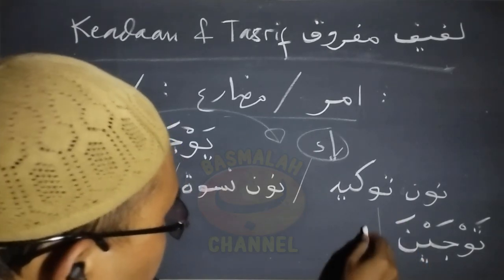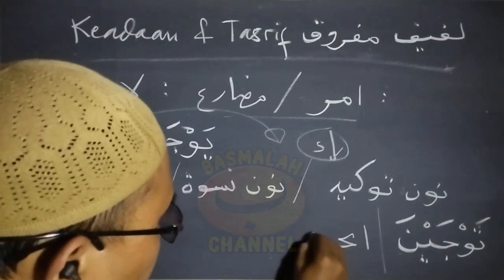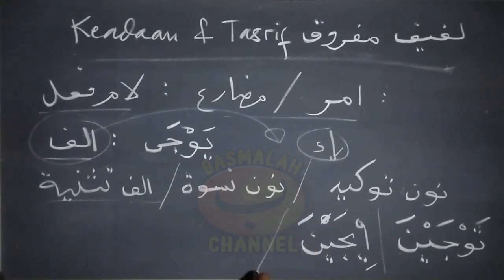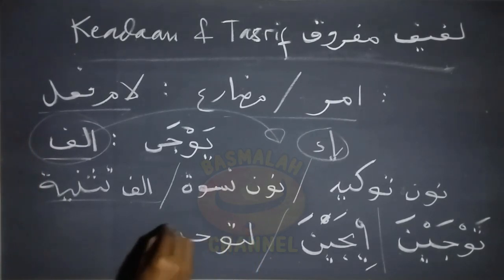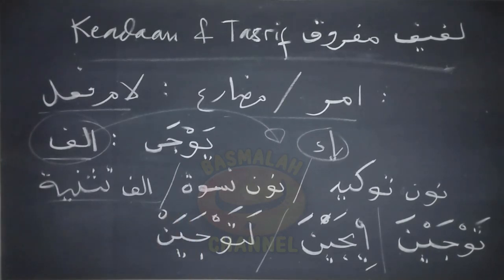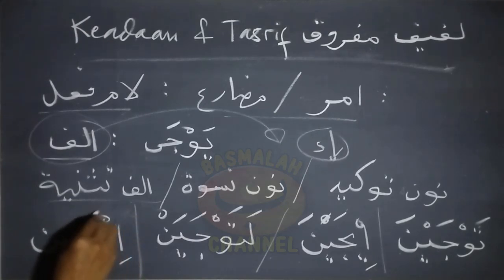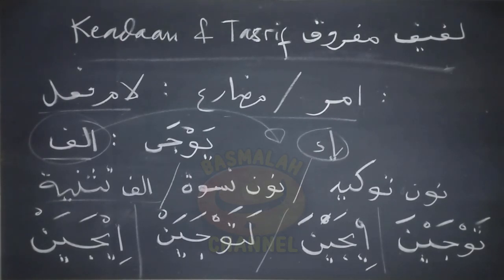Begitu juga ketika berbentuk fi'il amar maka akan menjadi ijaya. Selanjutnya ketika bersambung dengan nun tawkit maka akan menjadi latajiyanna. Ini manakala nun tawkitnya berupa nun tawkit khafifah. Manakala tsakilah maka akan menjadi latajiyanna. Selanjutnya ketika berbentuk fi'il amar akan menjadi ijayana atau ijayanna. Ini adalah keadaan dari lam fi'il dari bentuk fi'il mudhari' dan bentuk fi'il amar, manakala lam fi'ilnya berupa huruf ilat alif.